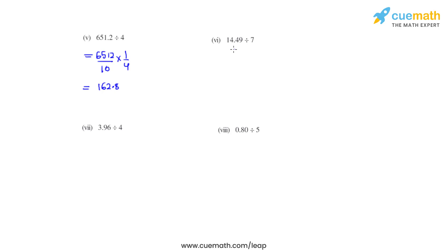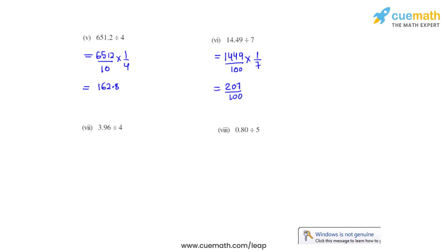Coming to the sixth bit, we have 14.49 which is to be divided by 7. 14.49 can be written as 1449 divided by 100. Division is replaced with a multiplication sign and we write the reciprocal of 7 as 1 over 7. 1449 on division by 7 gives us 207, which is to be divided by 100, so the final answer for the sixth bit is 2.07.